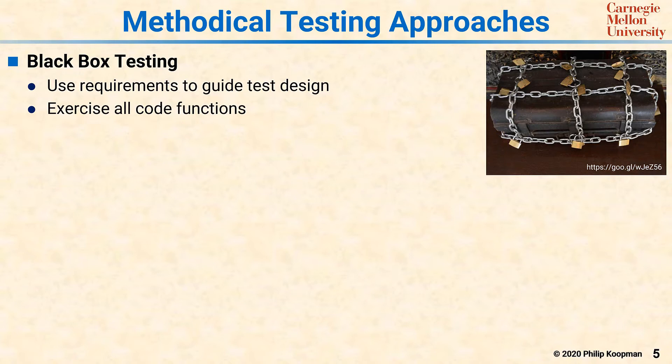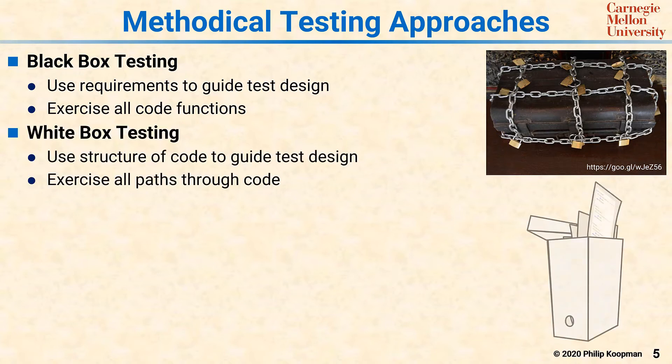In comparison, white box testing starts with the source code and works backwards, saying: I see the structure of the code. Let me make sure that my tests are designed to exercise all the code. Typically, the objective is to hit all the paths through the code.